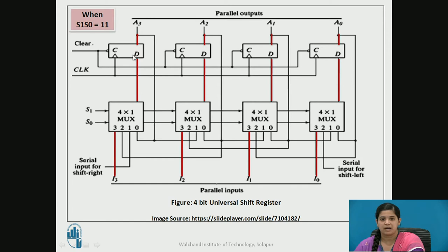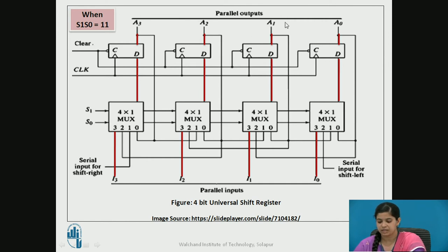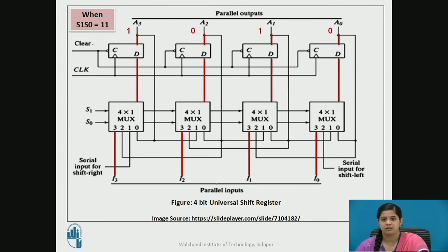Now when S1 and S0 equal 11, the dark red line indicates the path. I3, I2, I1, and I0 are the parallel inputs and A3, A2, A1, A0 are the parallel outputs. Only two clock cycles are required — the first clock cycle loads data from I3, I2, I1, and I0 simultaneously, as pin number 3 is selected with S1 S0 as 11. At the second clock pulse, the parallel outputs can be taken out. For example, data 1010 is loaded and at the next clock pulse we collect it simultaneously. This is the parallel input/parallel output operation.